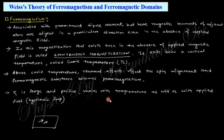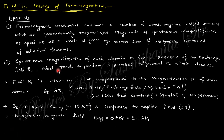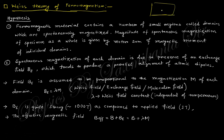The susceptibility chi is large and positive and varies with temperature as well as the applied field. Weiss theory takes the assumption that the ferromagnetic material contains a number of small regions called domains. Within each domain the dipoles are aligned in the same direction. The spontaneous magnetization of each domain is due to the presence of an exchange field B_e, which tends to produce a parallel alignment of the atomic dipoles.